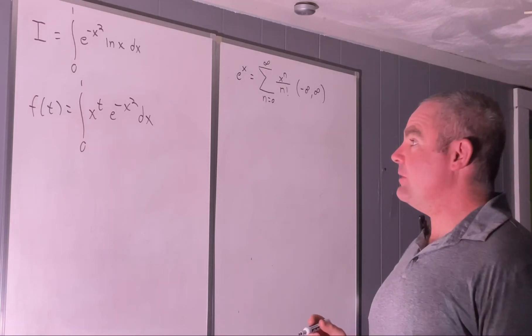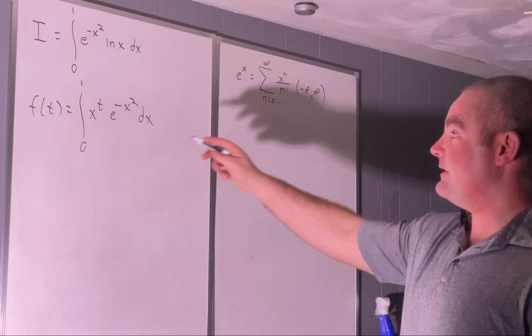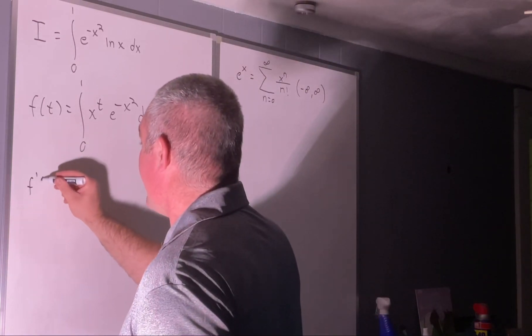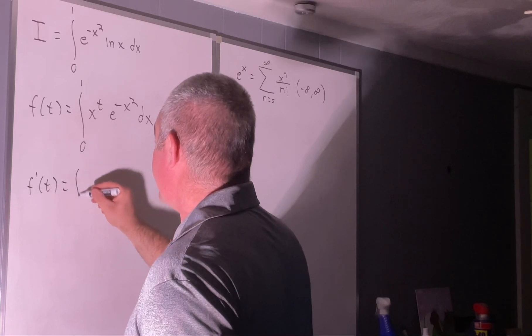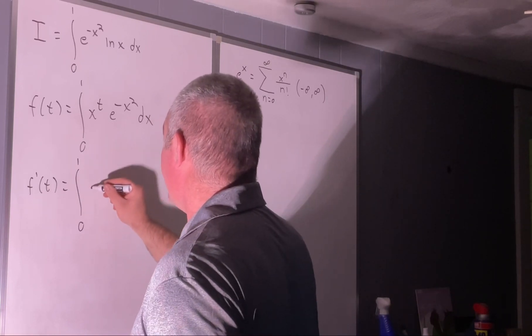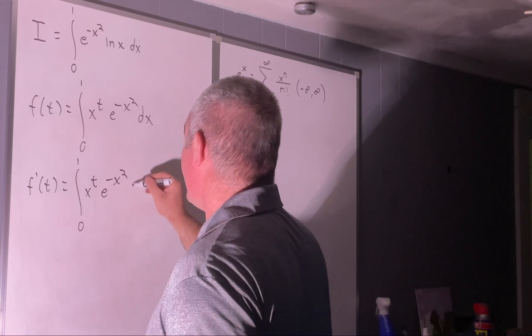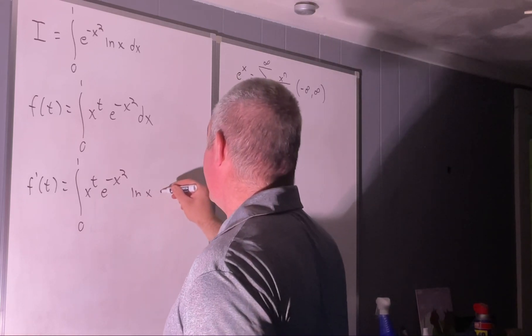Then what we'll do is take f prime of t using the Leibniz rule. So, that's going to give us f prime of t is equal to the integral from 0 to 1 of x to the t e to the negative x squared natural log x dx.